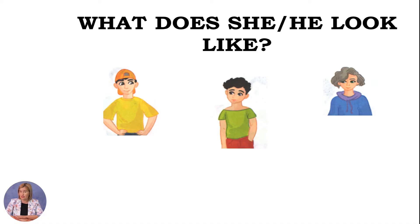At this lesson, we will talk about basic appearance subjects such as hair color, eye color, height and weight, practice vocabulary on the topic — what does she/he look like — and focus on the use of the learned words by describing physical appearance, as well as discuss the meaning of the question: what does she/he look like?